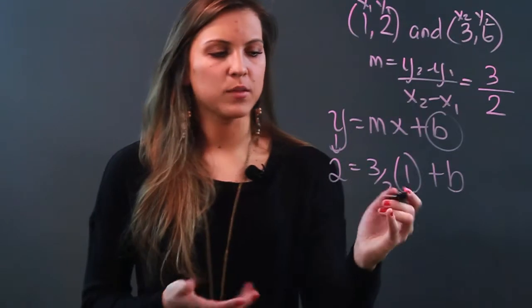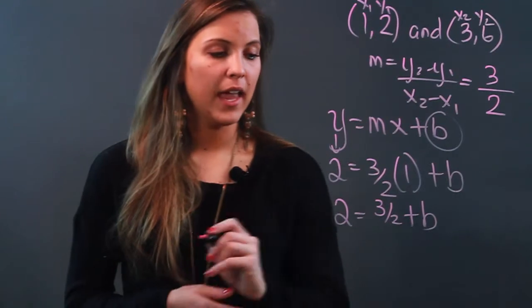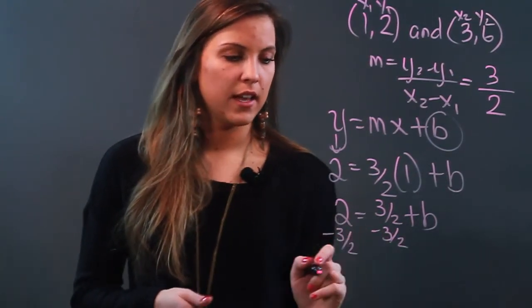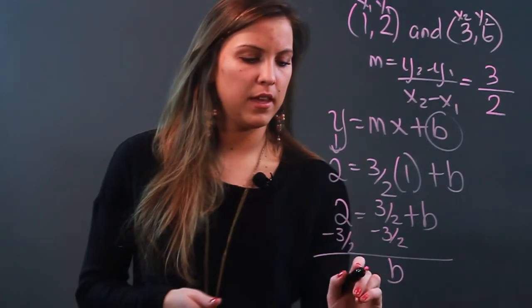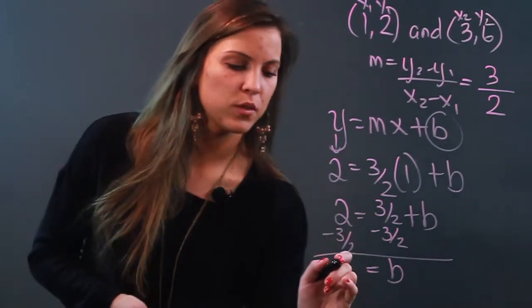So three halves times 1 is just three halves, so I have 2 equals three halves plus b. Now I'm just going to subtract three halves from both sides, and when I do that I get b equals...